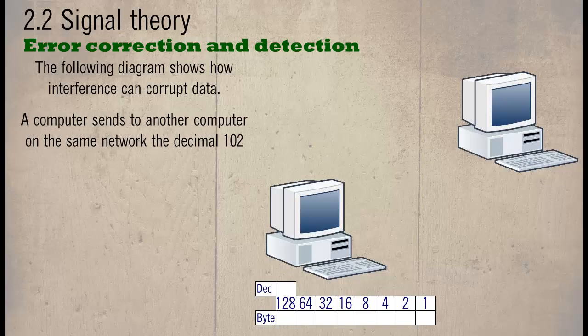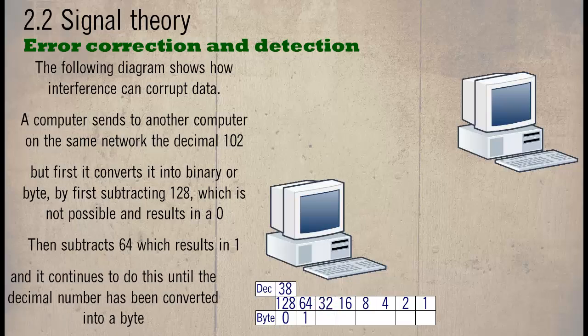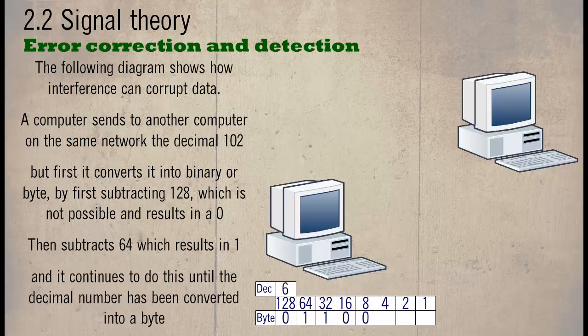A computer sends to another computer on the same network the decimal 102. But first it converts it into a binary or byte by first subtracting 128, which is not possible and results in a 0. Then subtract 64, which results in 1, and it continues to do this until the decimal number has been converted into a byte.